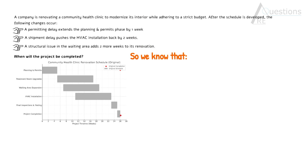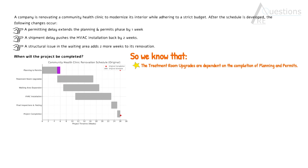Getting back to the question, we know that treatment room upgrades are dependent on the completion of planning and permits. So if we have a one-week delay in planning and permits, that would shift the treatment room upgrades by one week as well, because these are dependent activities. The second thing we know is the waiting area expansion is extended by two weeks. But treatment room upgrades, waiting area expansion, and HVAC installation are concurrent activities — they are not dependent on each other. So this two-week extension does not impact the overall completion duration of the project.